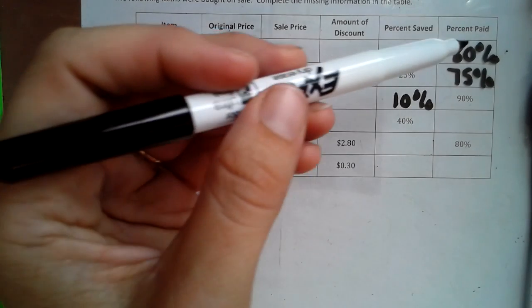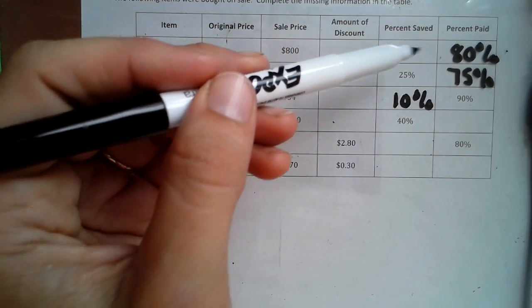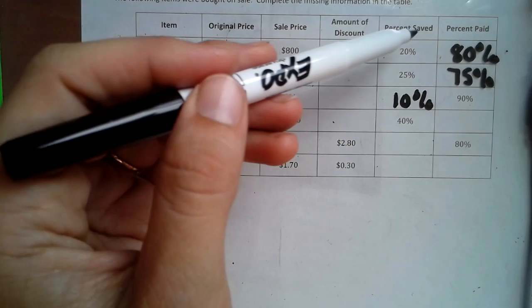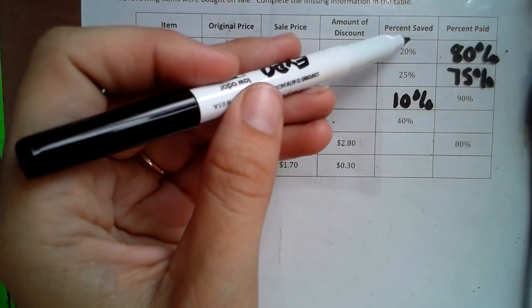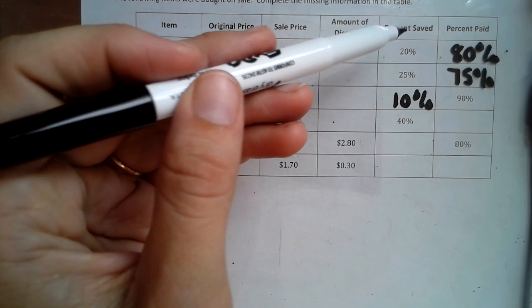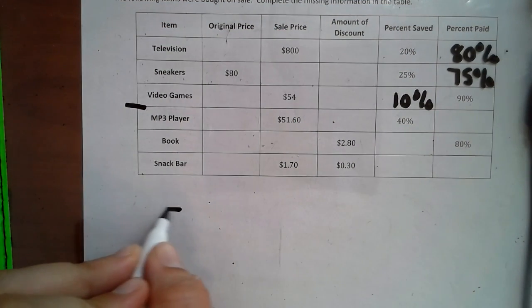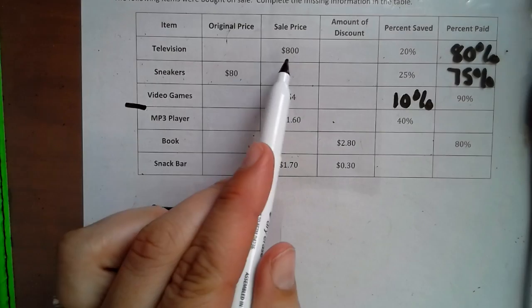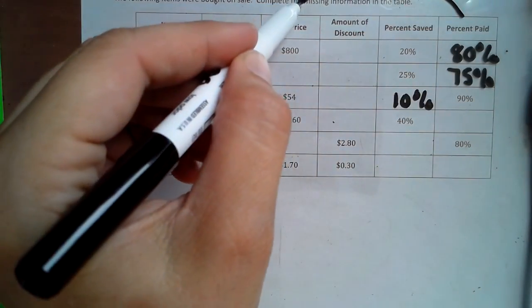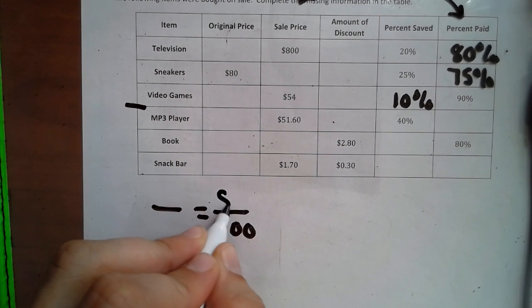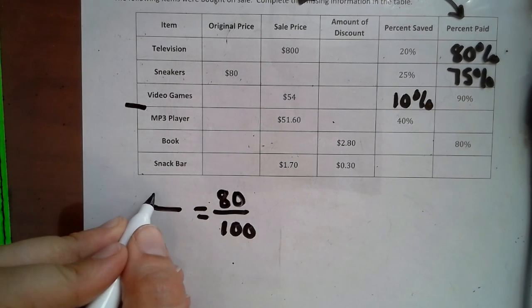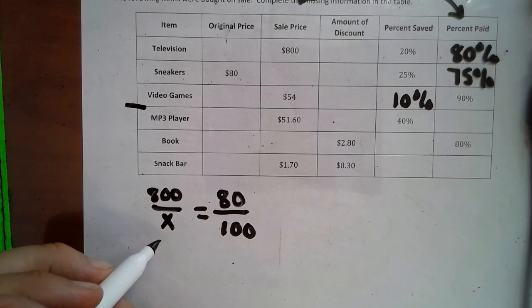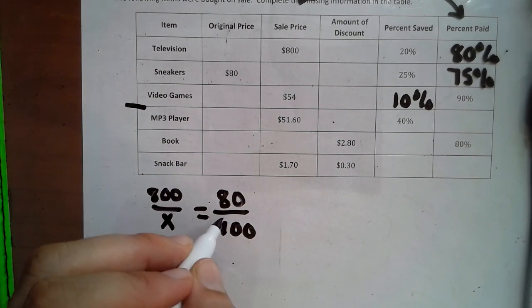If we know that the percent saved is 20% and the percent paid is 80%, we can find out, if we know the sales price, we can figure out since that's the percent saved, we can do a proportion. We have part over whole. This is always 100%. Percent paid is what the sale price is. So percent paid and sale price kind of go together. So if I put 80% here and my sale price was $800, I can find out how much the original price is going to be.